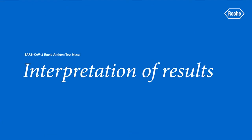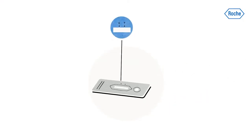Interpreting the results. A colored line appears in the top section of the result window to show that the test is working properly. This is the control line C. Even if the control line is faint or not uniform, the test should be considered valid.